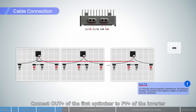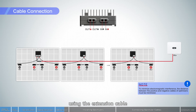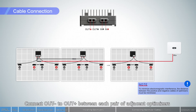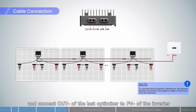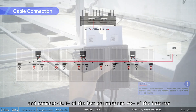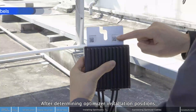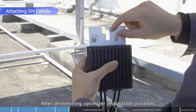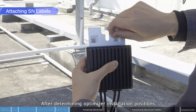Connect out positive of the first optimizer to PV positive of the inverter using the extension cable. Connect out negative to out positive between each pair of adjacent optimizers, and connect out negative of the last optimizer to PV negative of the inverter.